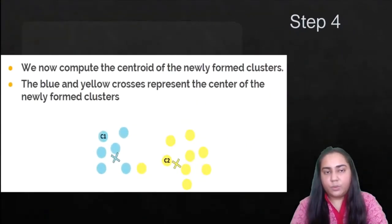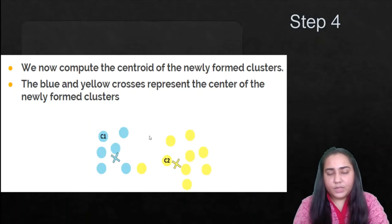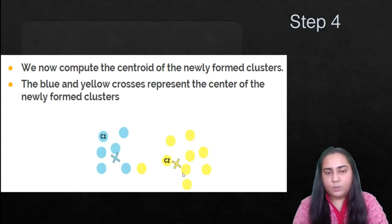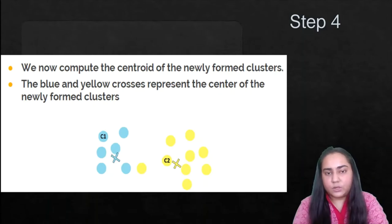Step four: we compute the new centroids of these clusters, because the previous centroids were merely provisional. The blue and yellow crosses now represent the centers of the newly formed clusters. Now that we have actual clusters, we can calculate and find their true centroids, instead of randomly picking them as we did earlier.